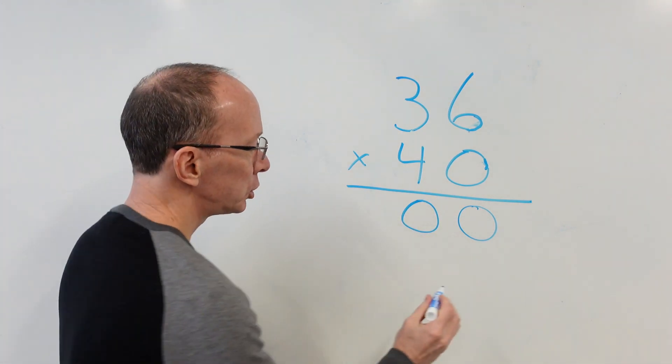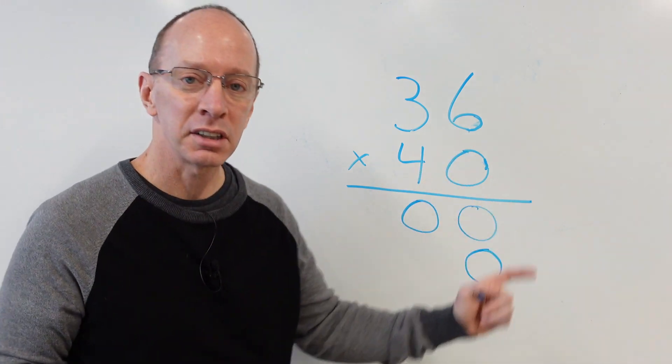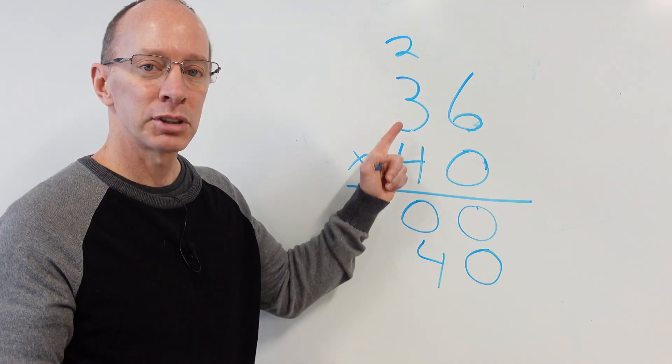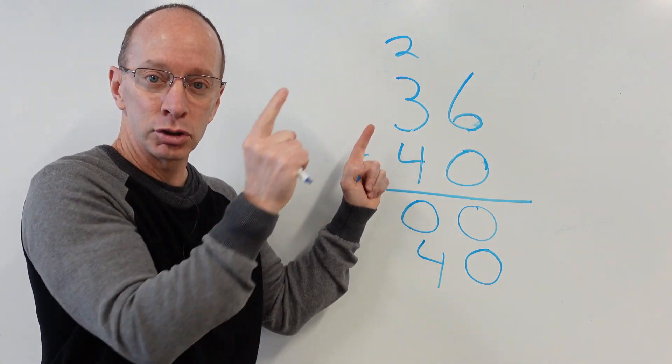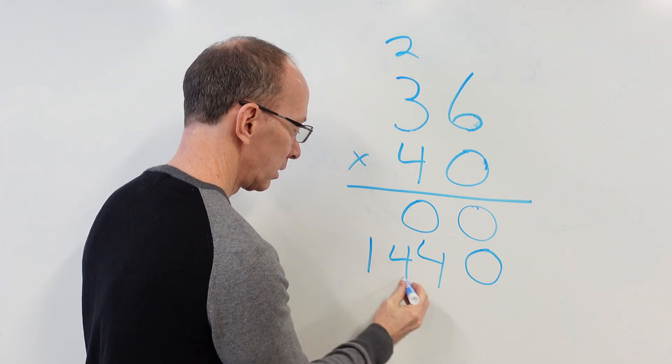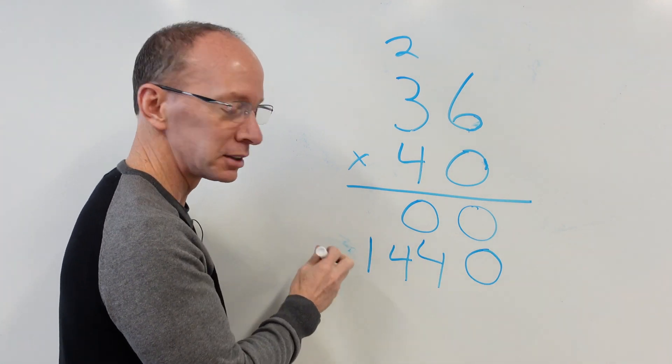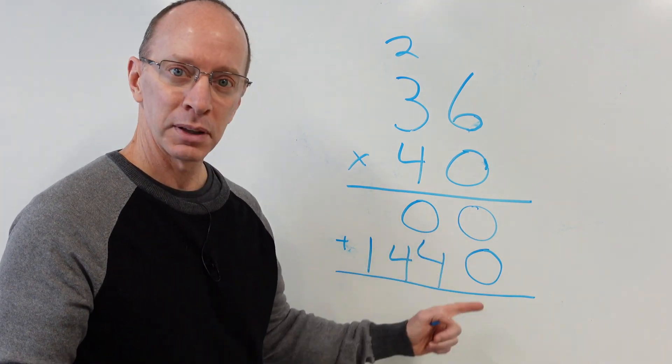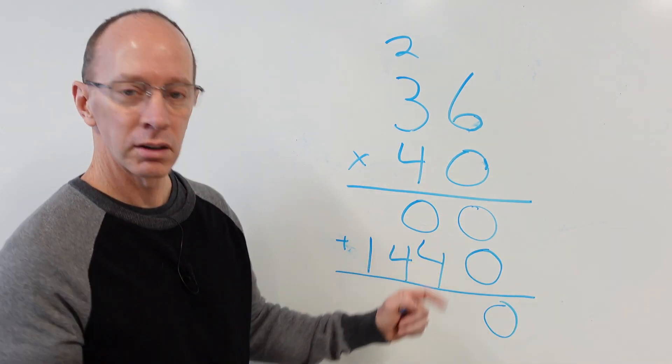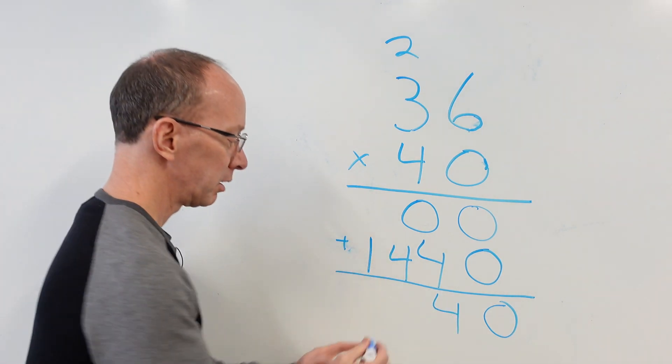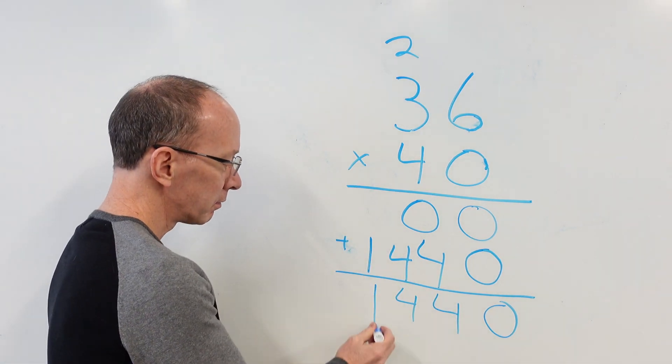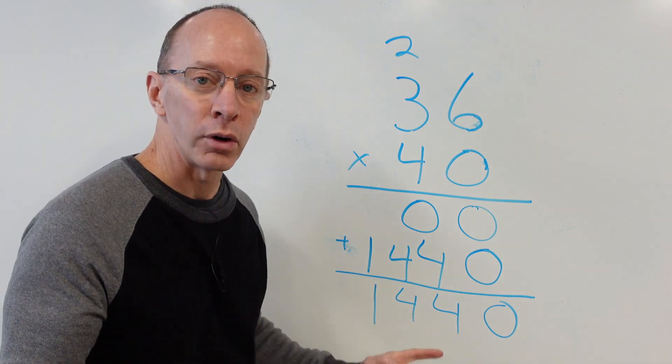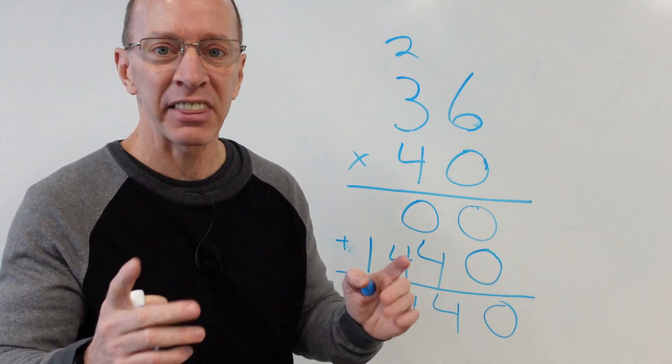All right. Now remember, this is like 40. You got to put that placeholder here. Put that placeholder. Four times six is 24. Put the four here. Put the two on top. Four times three? Twelve. Don't forget to add that two. Twelve, thirteen, fourteen. I almost put a multiplication sign there. Don't do that. Addition sign. All right. Let's add it up. Zero plus zero? Zero. Four plus zero? Four. Drop it down. Drop it down. Oh, 36 times 40 equals 1,440. Whoa, you guys are math ninja pros.